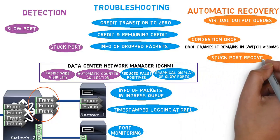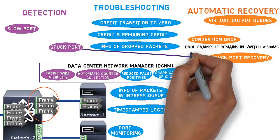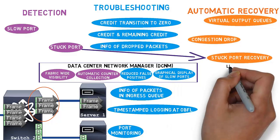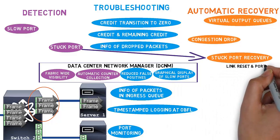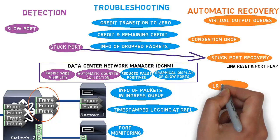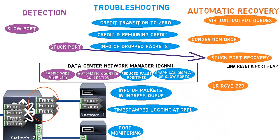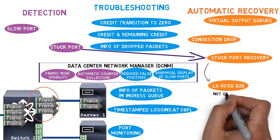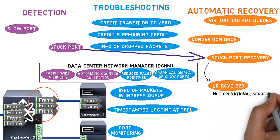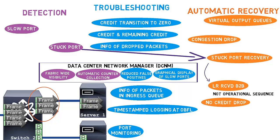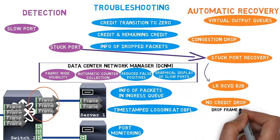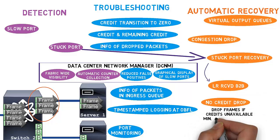A port in a stuck condition can undergo link reset or port flap. On receiving link reset, if the ingress buffers cannot be freed, a special condition is flagged called LR received B2B. On top of that, MDS switches allow you to configure a no credit drop timeout value.